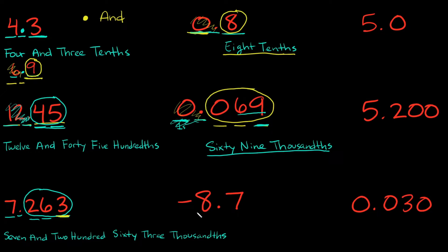Now let's look at a negative: negative 8.7. How do you deal with the negative? Nothing changes — all the same rules apply. The only difference is you say 'negative' at the very beginning. If I just had 8.7, I'd read it as 'eight and seven tenths.' But since I have the negative, I would read this as 'negative eight and seven tenths.' Easy enough.